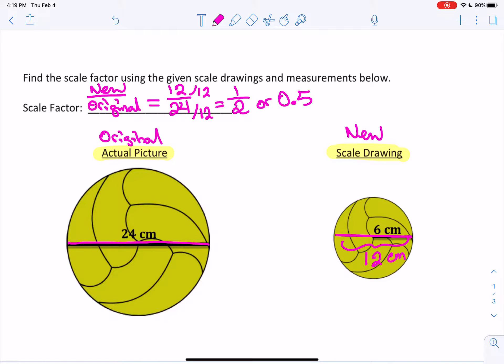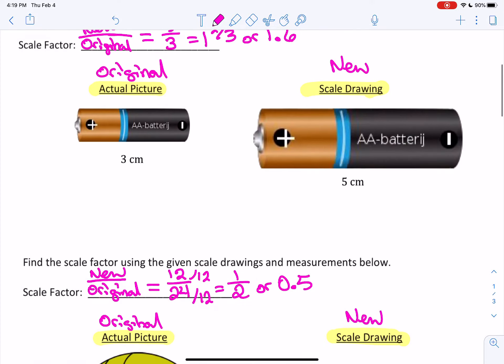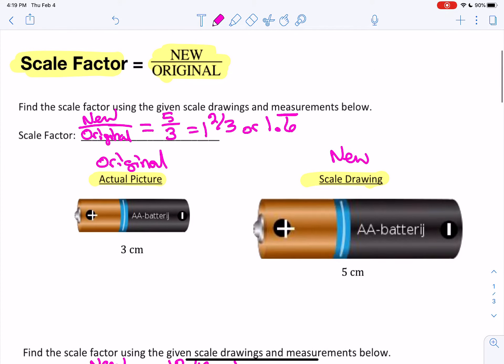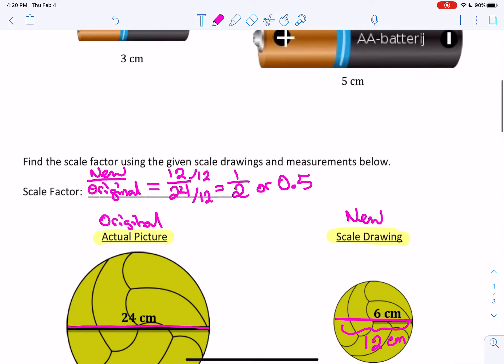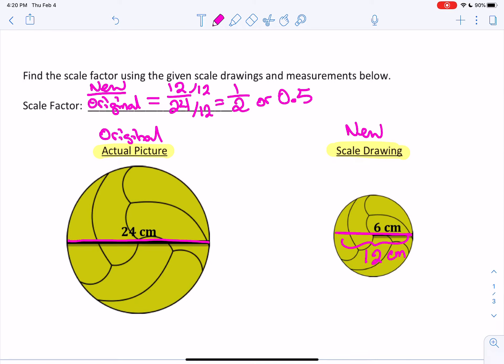Okay, now you will notice, or I want you to notice. In the first example, when we went from a small battery and enlarged it to a bigger battery, the unit rate was greater than a whole number. It was a mixed number, but we have one, which is a whole number, and then two-thirds. So it got bigger because it was greater than one.